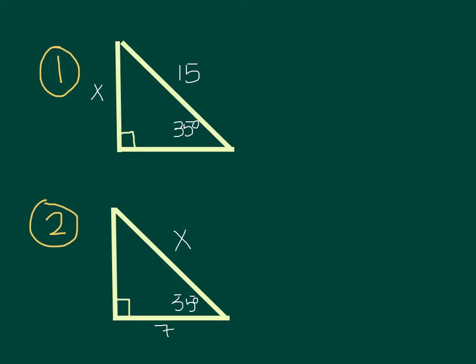Here you can clearly see that we're missing this side and it's indicated by this X. So I'm going to start the problem by labeling my sides opposite, adjacent, and hypotenuse in reference to this 35 degree angle.